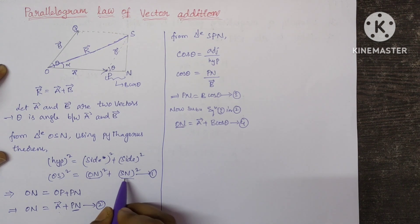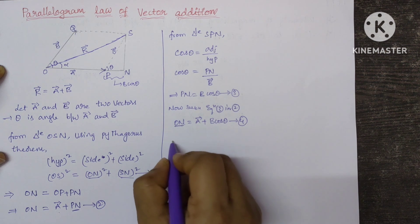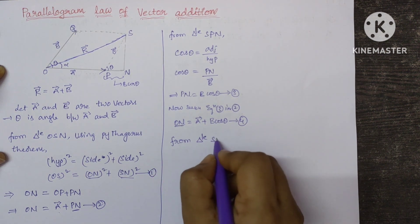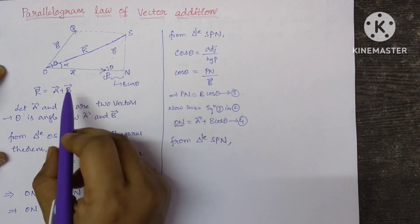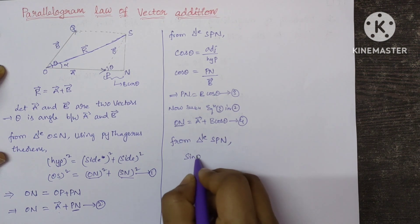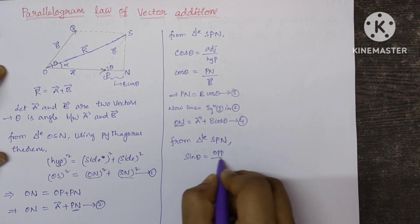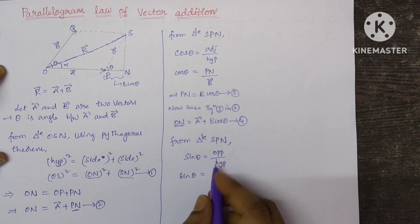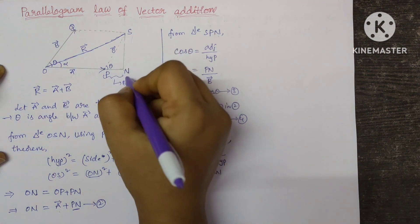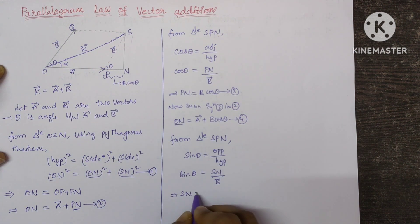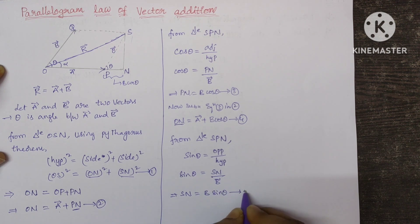Now we have to find the SN value. From triangle SPN, sin theta equals opposite side by hypotenuse. The opposite side is SN and the hypotenuse is B bar. So that implies SN = B sin theta. Let this be equation number 5.